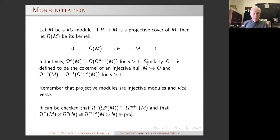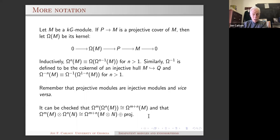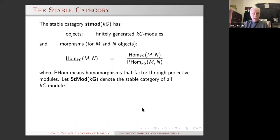I'll use the omega notation: Ω(M) is the kernel of a projective cover onto M. Ω⁻¹ is the cokernel of an injective hull. Since kG is a self-injective ring, projective and injective modules are the same. You can iterate omega, and Ω^(n+m)(M) = Ω^n(Ω^m(M)). Ω⁰ is just the non-projective part of the module.